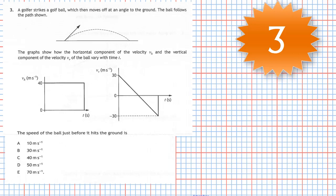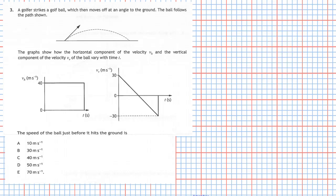Question three from section one of the 2019 Higher Physics examination. A golfer strikes a golf ball which moves off at an angle; the ball follows a projectile path. The left-hand graph shows the horizontal velocity is constant at 40 meters per second. The right-hand graph shows the vertical component starts at 30 m/s, decreases to zero, and just before landing is minus 30 meters per second — pointing downward.